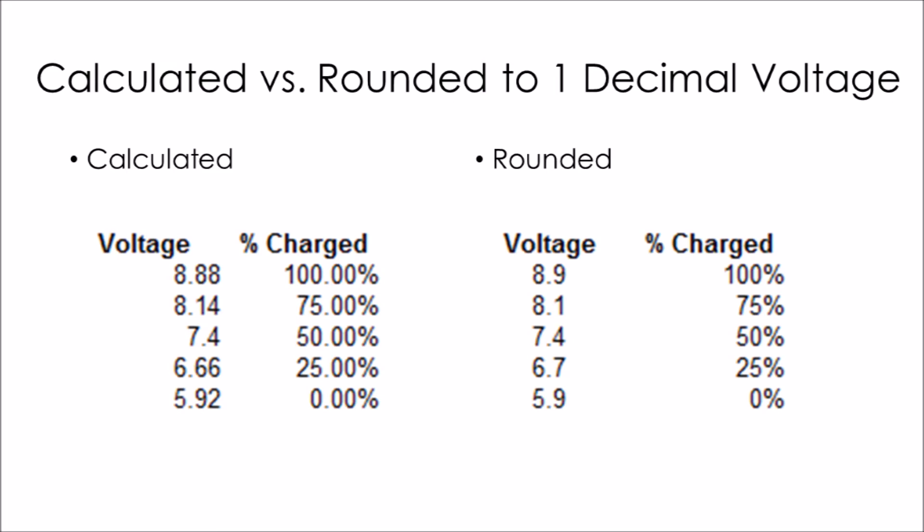So on the left is what I've calculated to two decimal places. On the right is what I have rounded to one decimal place, which should be what the radio shows when you push the zero button. When you pull it off the charger, it should show about 8.9 volts, and as you get closer to 5.9 volts, you're getting closer to the battery being empty.